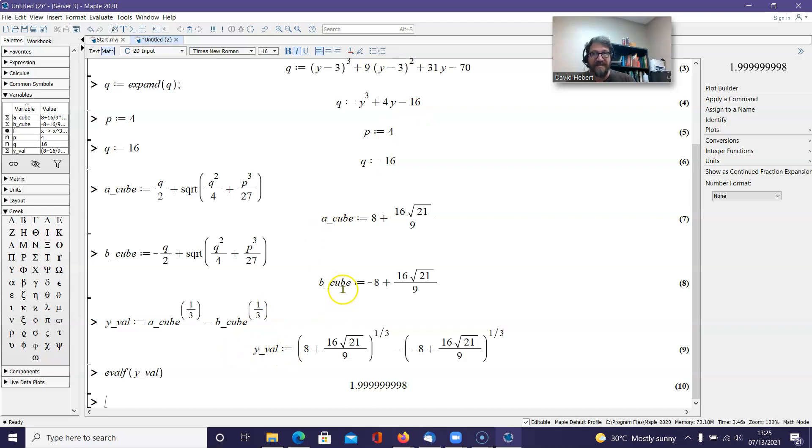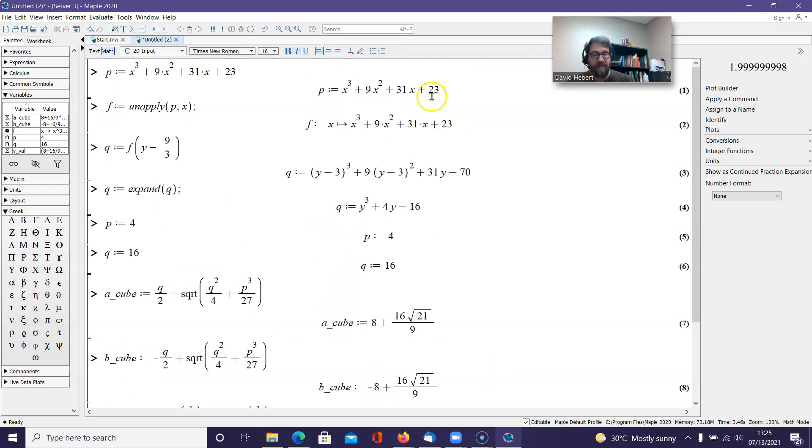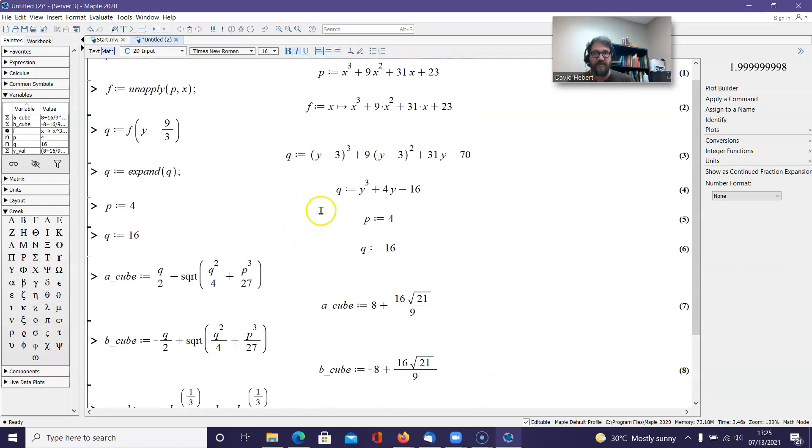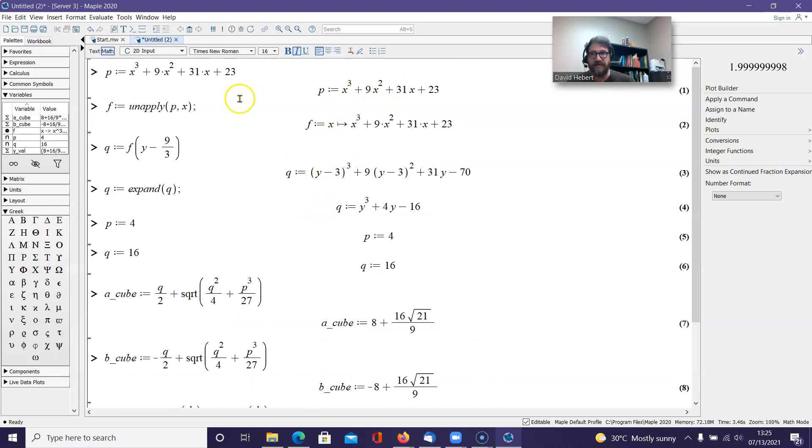But this isn't the answer to this problem up here. If you'll remember, this problem up here to solve f, I did a substitution. I said x is equal to y minus 3. So if you write that down, x equals y minus 3, y is equal to x plus 3.